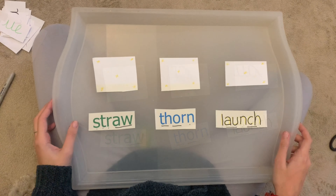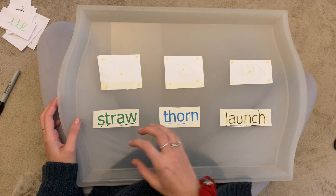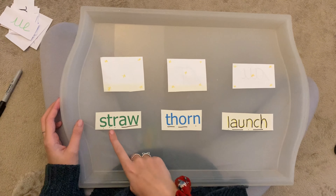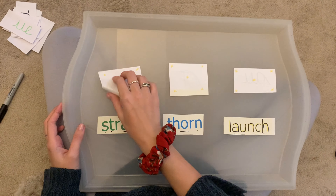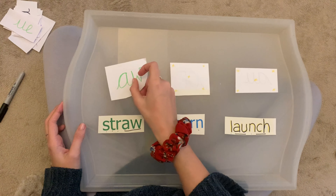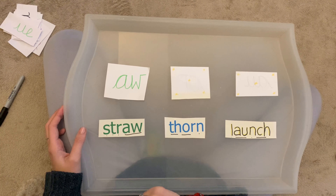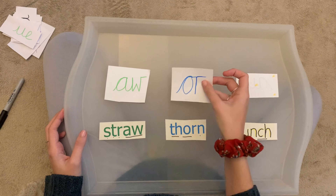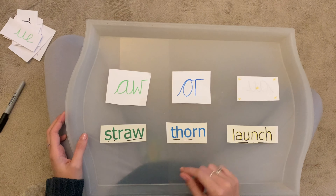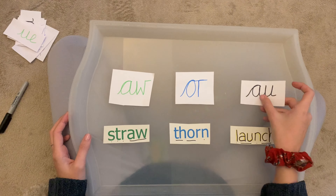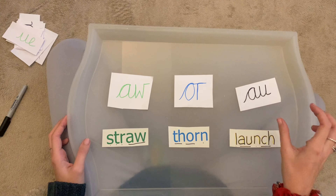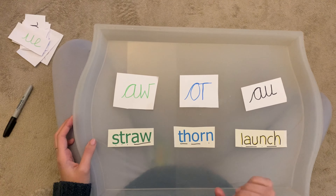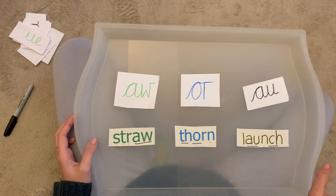They all have the OR sound but there are three different representations. For example, in the word 'straw' the digraph is AW. In the word 'thorn' the digraph is OR, and in the word 'launch' it's AU. They're all spelt differently, however they all make the same sound.